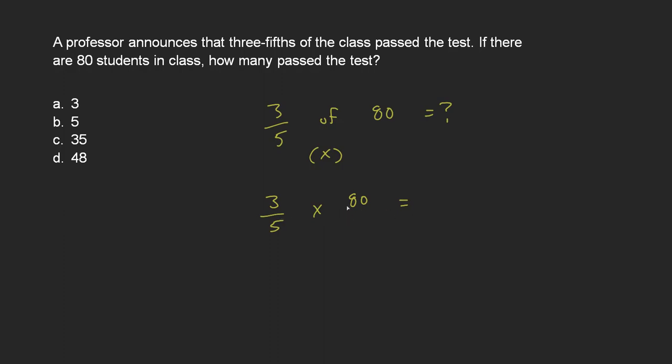Now probably the easiest way would be to turn them both into fractions. That might not sound like an easy thing to do. However, any number by itself, like 80, can be made into a fraction by just putting it over one.